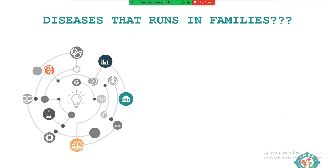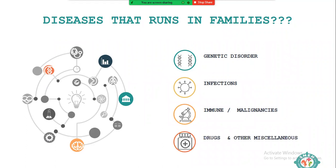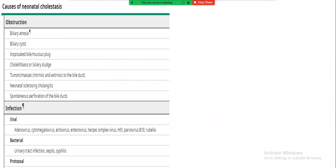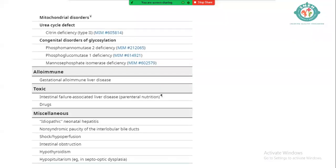What diseases run in families? Genetic disorders come first, then certain infections that recur in the same mother, immune conditions, malignancy, and certain drugs. We had to explore all possible options, take history again, and dig deeper. Using UpToDate, the causes of neonatal cholestasis include a long list: obstruction, infections, inherited cholestatic disorders, carbohydrate metabolism disorders, IEMs, alloimmune, and toxic causes — we had to go through each one.